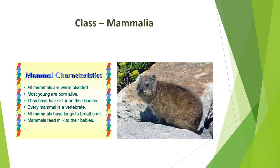The skin of mammals is unique in possessing hair. External ears, or pinna, are present. Different types of teeth are present in the jaw. The heart is four-chambered. They are warm-blooded animals. Respiration is by lungs. Sexes are separate and fertilization is internal.